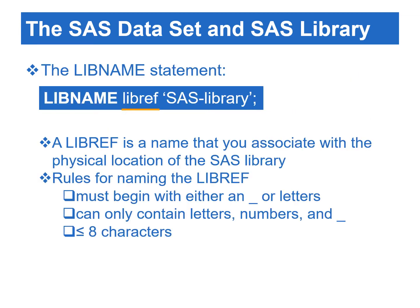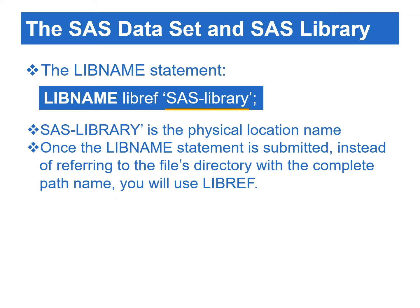In the libname statement, libref is the logical library name, while SAS library is the physical location of the file folder. There are three rules for naming libref: the starting position begins with either an underscore or a letter; the non-starting position can contain an underscore, letters, and numbers; and the length of the libref cannot be more than eight characters. The basic idea of using the libname statement is associating a logical SAS library name, libref, with the directory path in which permanent SAS data sets are stored. Thus, in our program, instead of referring to the file's directory with the complete path name, we will use libref.